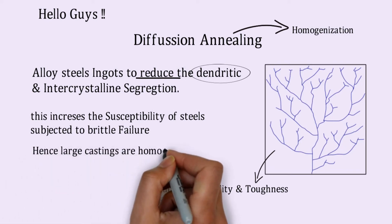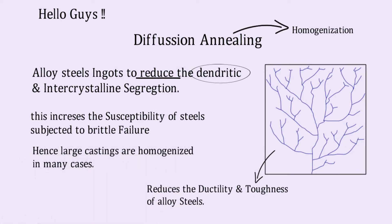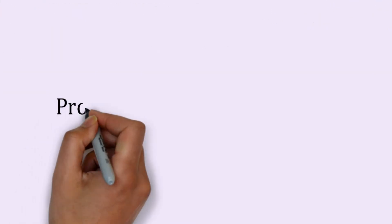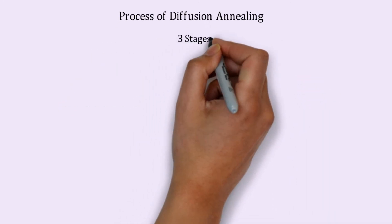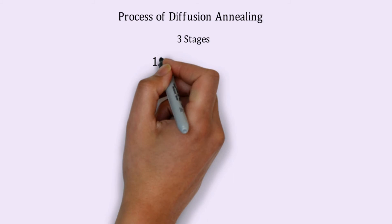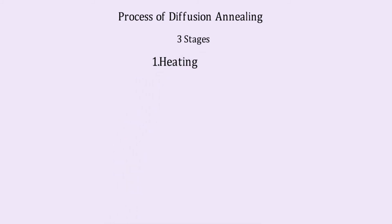Hence, the larger castings are homogenized in many cases. So let us understand the process of this diffusion annealing. There are three stages mainly, as we have seen in our last videos.